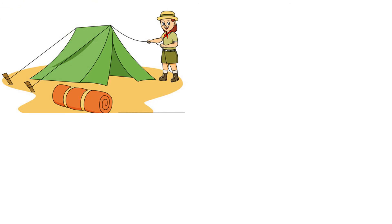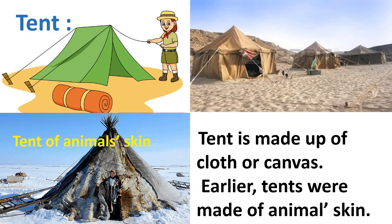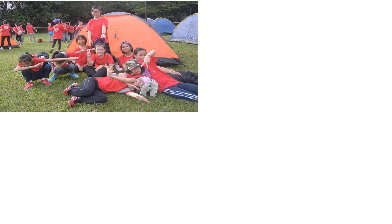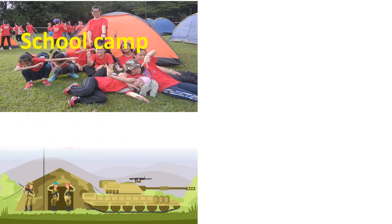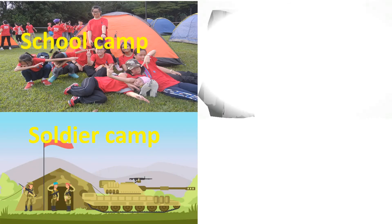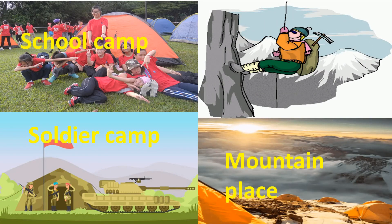Some special houses are found in certain places. A tent is made up of cloth or canvas, but earlier tents were made of animal skin. Tents are used in desert places for travelling from one place to another and to live somewhere for a short time. We can see tents in school camps, army camps, mountain places, etc.